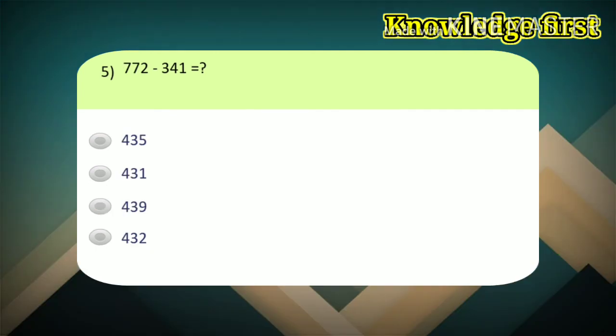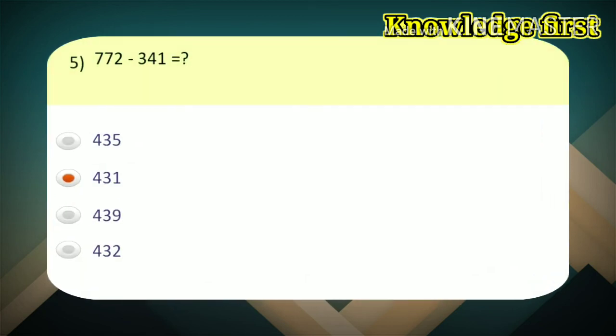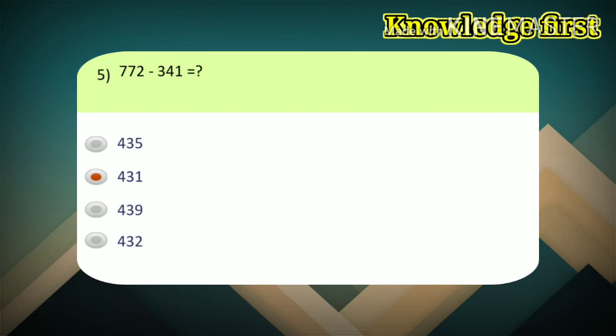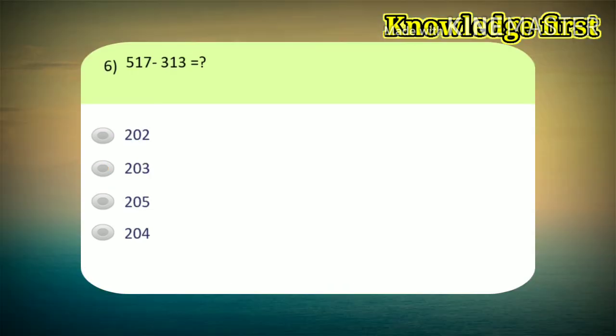Fifth example, 772 minus 341. Correct answer is 431. Sixth example, 517 minus 313.